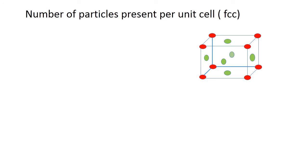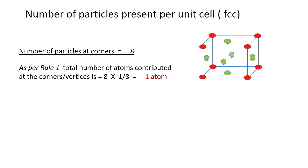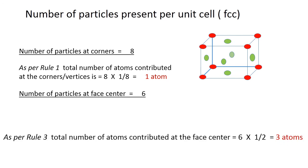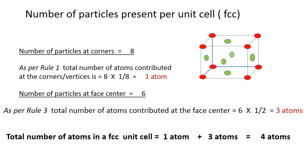For the face-centered cubic unit cell (FCC): the number of particles at the corners is eight, so corner contribution is 8 × (1/8) = 1 atom. In addition, there are atoms at the faces — the total number of faces is six. As per rule three, the face contribution is 6 × (1/2) = 3 atoms. Therefore, the total number of atoms in an FCC unit cell is 1 + 3 = 4 atoms.